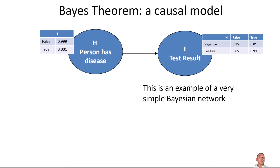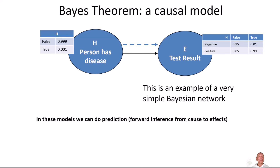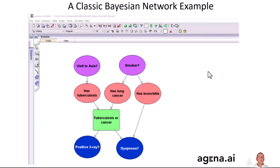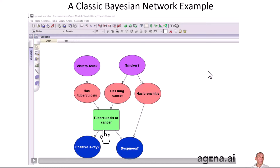In general, a Bayesian network will consist of multiple variables, not just two. The necessary Bayesian inference calculations are quite complex because inference has to propagate around the whole network. Fortunately, efficient propagation algorithms have been around since the late 1980s and have been implemented in tools like AgenaRisk. Once the Bayesian network structure and the conditional probability tables have been specified — that's the full specification of the Bayesian network — all of the Bayesian inference computations are performed automatically.